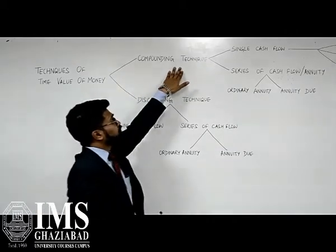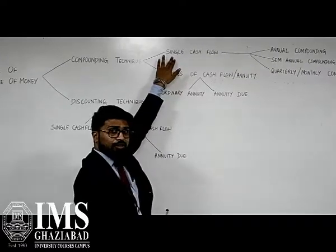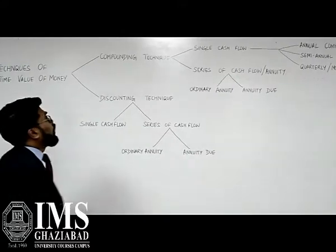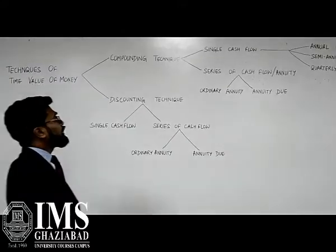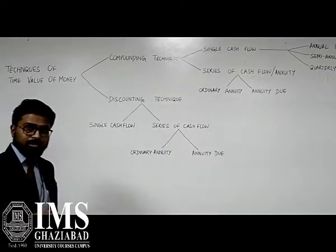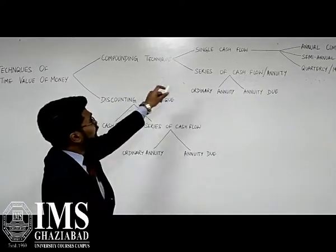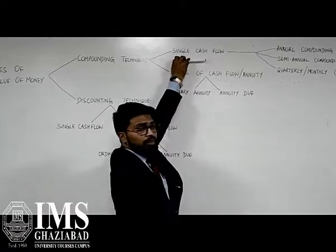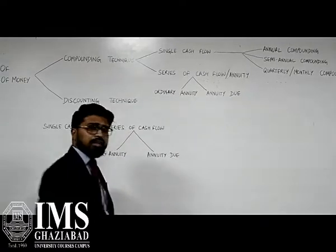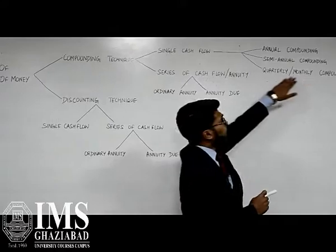In compounding technique, we have two techniques: single cash flow and series of cash flow or annuity. In compounding technique, we are calculating interest on a future value basis. In single cash flow, we have three kinds of methods: first one is annual compounding, second one is semi-annual compounding, and the third one is quarterly or monthly compounding.